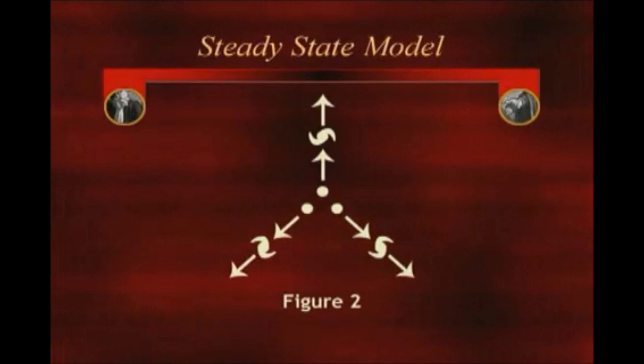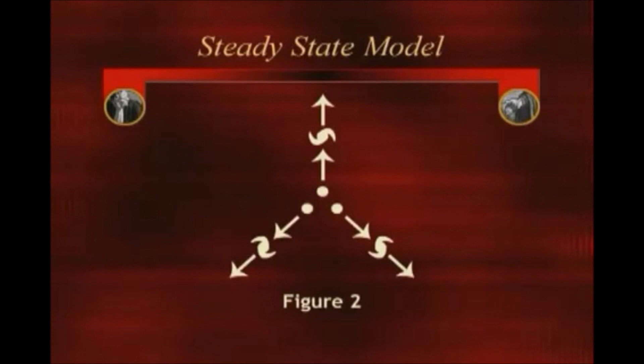In 1948, Fred Hoyle, together with Herman Bondi and Thomas Gold, broached the first alternative to the standard Big Bang theory: the steady state model of the origin of the universe.